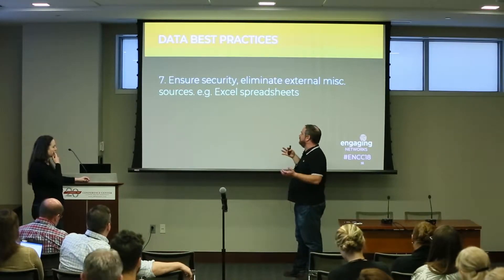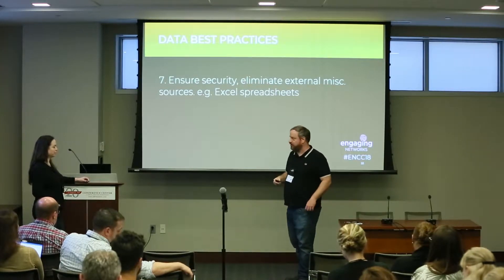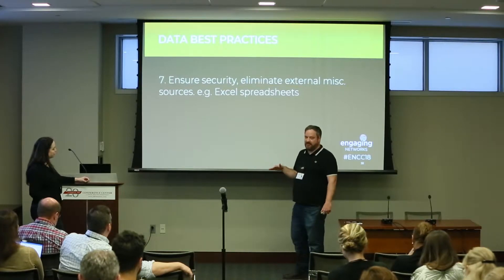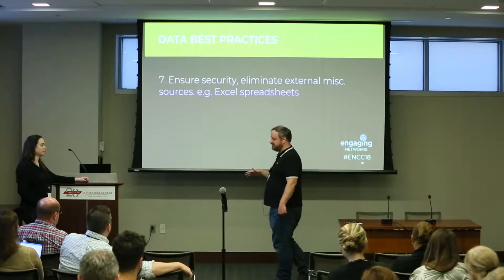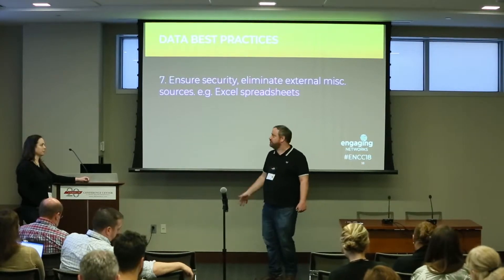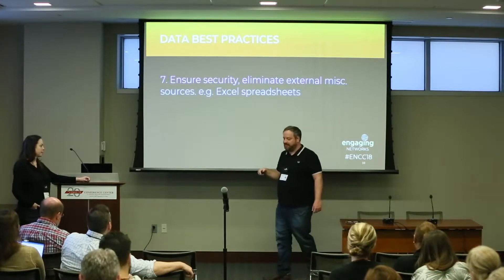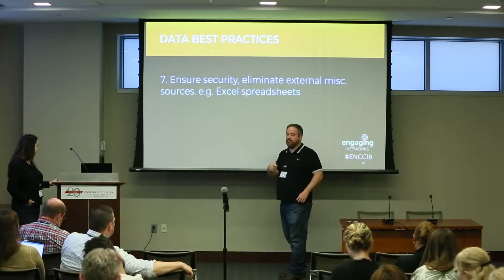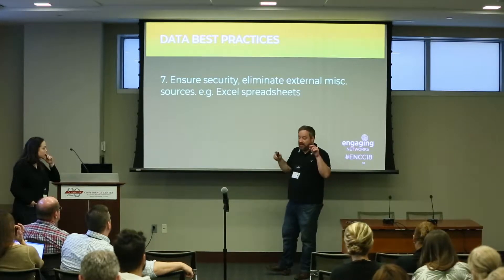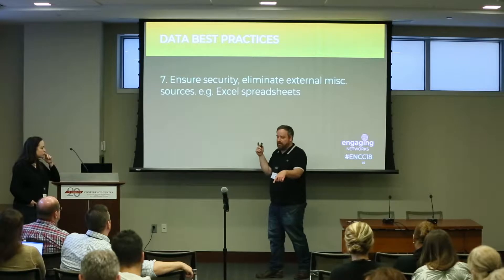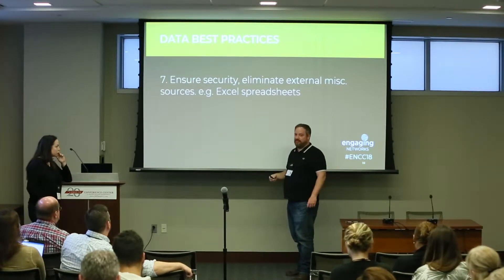Number seven is from a security and privacy perspective. Europe just passed really strict regulations; Canada has strict regulations; it's coming across the world. From a privacy perspective, regardless of ease of reporting and donor stewardship, it's good to start eliminating external Excel spreadsheets. It's so easy to get something printed off or left at a printer. As privacy legislation and anti-spam laws kick in, if you have all these miscellaneous sources, how are you going to manage opt-outs across a volunteer spreadsheet, a separate database, and all these multiple sources?